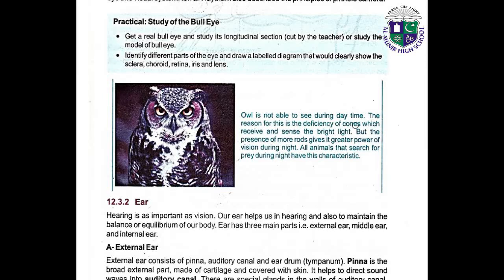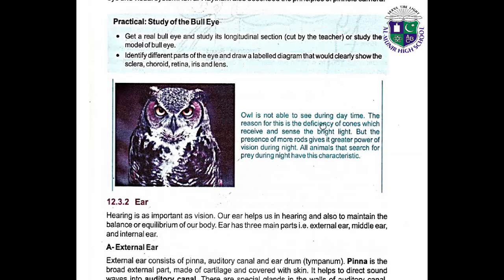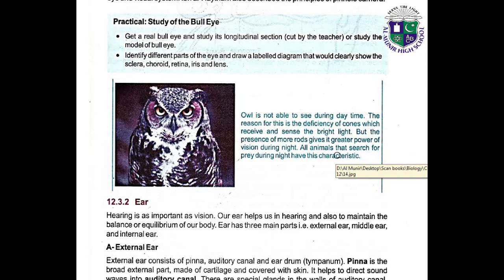An owl is not able to see during the daytime because of a deficiency of cone cells, which function in bright light. However, the presence of more rod cells gives it greater power of vision during the night. All animals that search for prey at night share this characteristic.